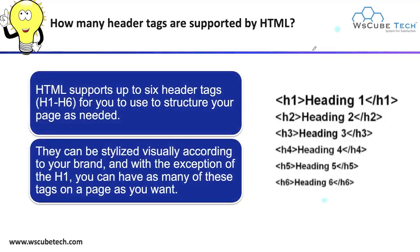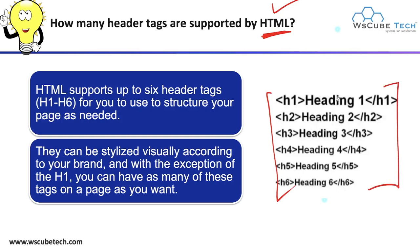How many header tags are supported by HTML? HTML supports six different types of header tags. H1 is the biggest heading. H2 is smaller — the subheading of H1. H3 is the subheading of H2. H4 is the subheading of H3. H5 is the subheading of H4. And H6 is the subheading of H5. So HTML provides header tags from H1 to H6, which you can use to structure your page.